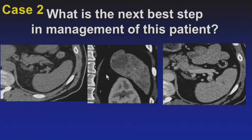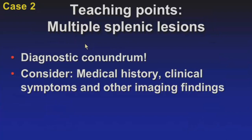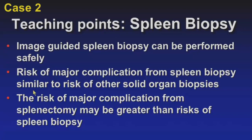The next best step in management was biopsy, which diagnosed littoral cell angioma. Teaching points for multiple splenic lesions: this can be a diagnostic conundrum because of the nonspecific imaging appearance. Consider medical history, clinical symptoms, and other imaging findings to help guide diagnosis. Spleen biopsy may seem scary since the spleen is essentially a large bag of blood, but it can be done safely — studies show the risk of major complication is similar to other solid organ biopsies. Consider that the alternative of splenectomy puts the patient at risk for lifelong morbidity.